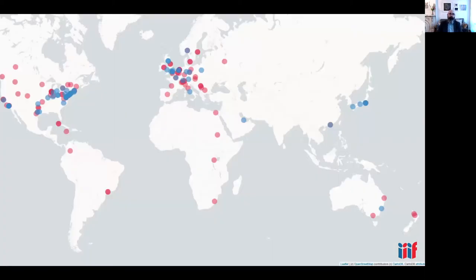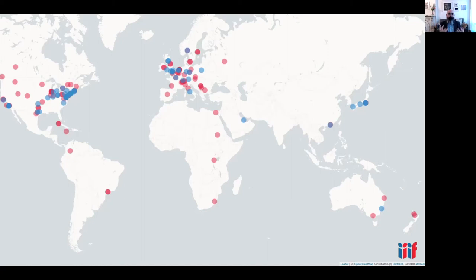This is a quick view into some of the places that we know of that have implemented IIIF, though by no means all of the places making use of it. The dots in red are major implementations that we know about. The dots in blue are actually members of the IIIF consortium that help fund the work, making this a sustainable project — putting on conferences and doing all the education work to make those open standards really thrive in the global web community.